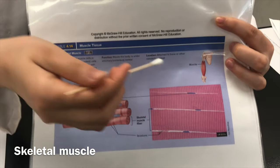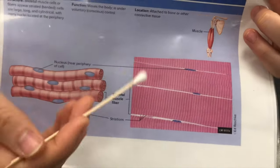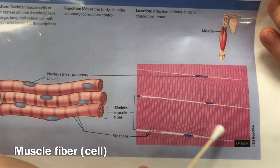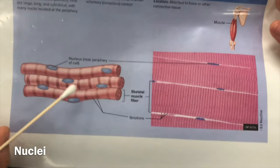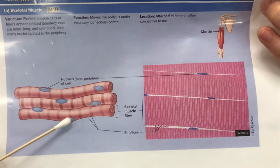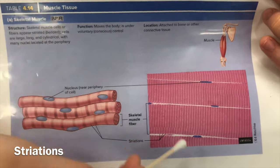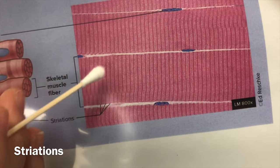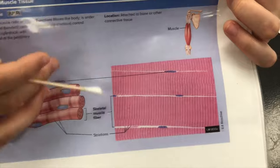Next we have skeletal muscle. This forms all your voluntary muscles — your biceps, your abs, and so on. The muscle fiber is this whole cell right here; muscle fiber is the same as a muscle cell. Something unique here is that there are multiple nuclei per cell, because muscle cells run the whole length of your muscle and require more genetic control. You can also see striations — these little lines — which result from your microfilaments, actin and myosin, forming patterns within the cell.